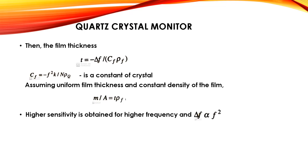The film thickness t is equal to −delta_f / (C_f × rho_f), where C_f = −f² × k / (n × rho_q) is a constant of the crystal. Assuming uniform film thickness and constant density of the film, m/A = t × rho_f. Higher sensitivity is obtained for higher frequency, and delta f is proportional to f². That concludes the quartz crystal monitor theory.